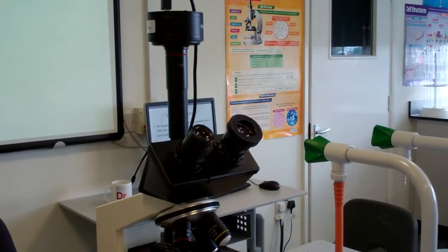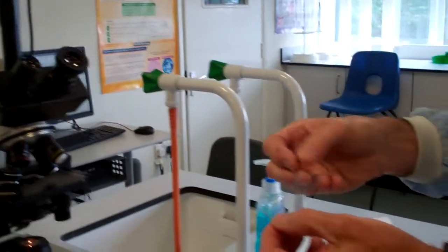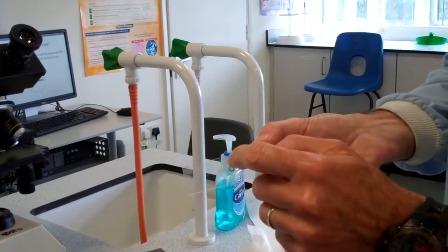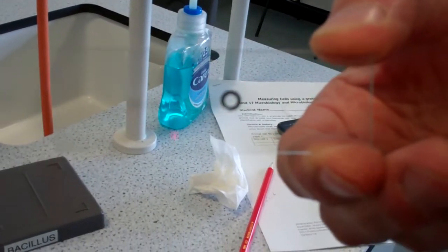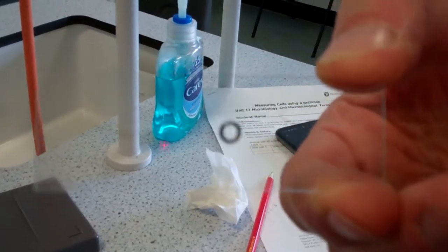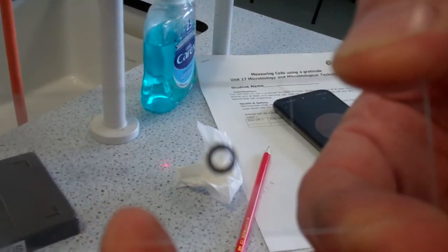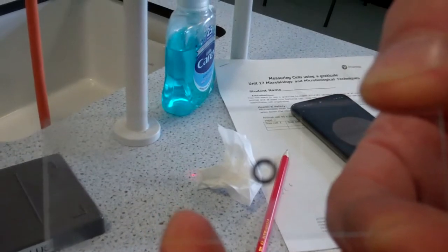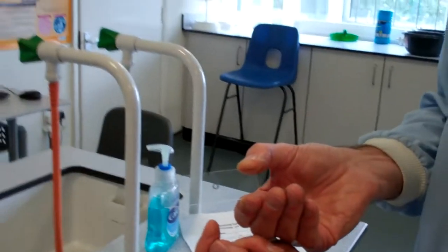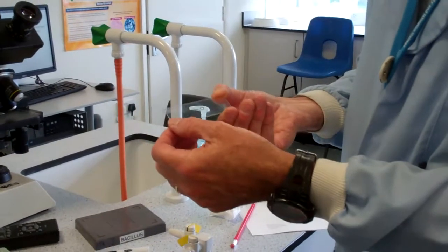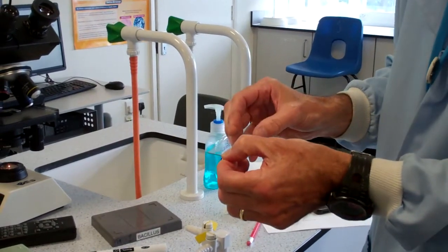We also need to use a special slide called a stage micrometer. Can you see the circular ring? It's got laser cut divisions which are 0.01 millimeters apart for each division. 0.01 millimeter is also known as 10 micrometers, which is a standard unit of measurement when looking at cells.